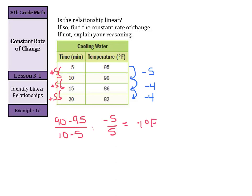If we compare that to the next one, where we went 86 minus 90 over 15 minus 10, this gets us negative 4 over 5. Well, this simplifies to 0.8 or negative 0.8 degrees Fahrenheit.